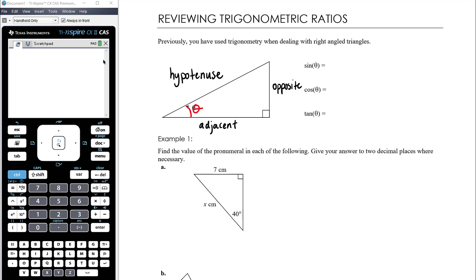So the trig ratios enable us to connect angles and side lengths in right-angled triangles. So in a right-angled triangle, sin of theta is equal to the opposite side length divided by the hypotenuse. Cosine or cos of theta is equal to the adjacent side divided by the hypotenuse. And tan or tangent of theta is equal to the opposite side divided by the adjacent.